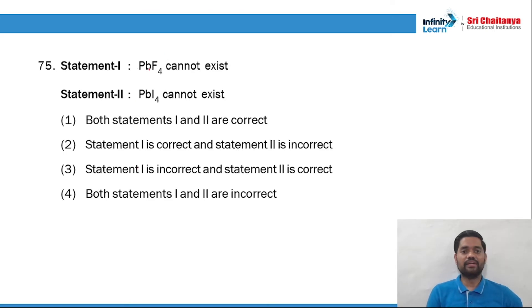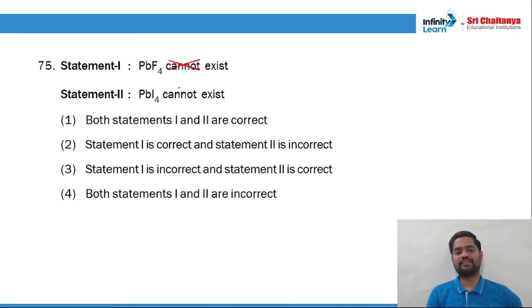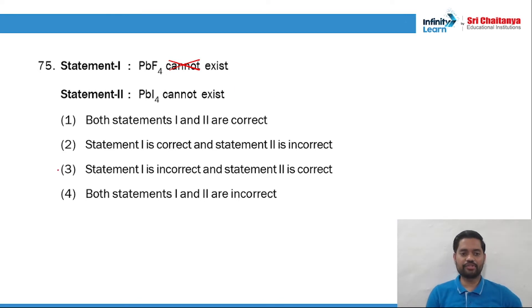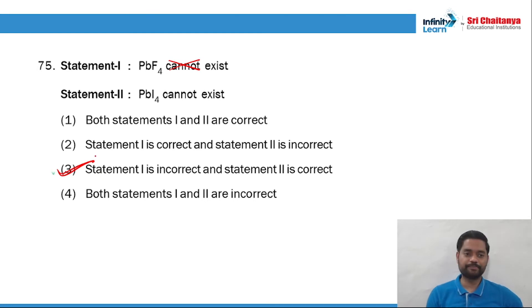Question 75: 'PF5 cannot exist' — it can exist, so this is incorrect. 'PIF4 cannot exist' — yes, this is true. So statement 1 is incorrect and statement 2 is correct. Option 3 is the right answer.